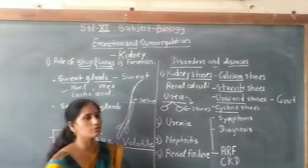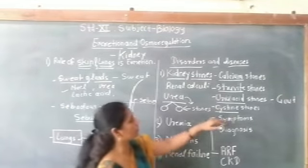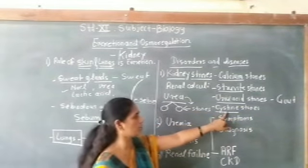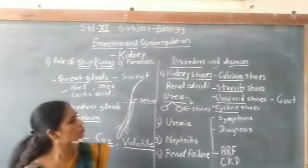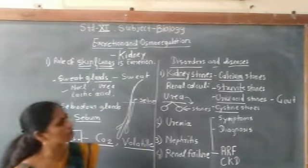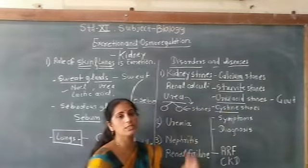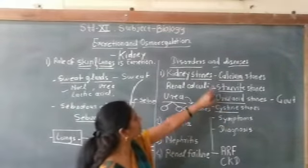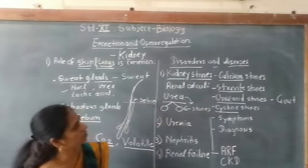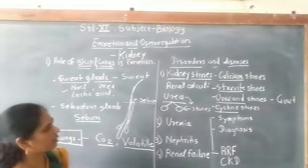Cysteine stones are mainly formed by excess removal of certain amino acids and are one of the genetic disorders transmitted from one generation to the next. Such genetically-caused stones are found in some families. So the four types of stones are: calcium stones, struvite stones, uric acid stones, and cysteine stones — caused by accumulation of urea, uric acid, abnormal diet, bacterial infection, or genetic disorder.